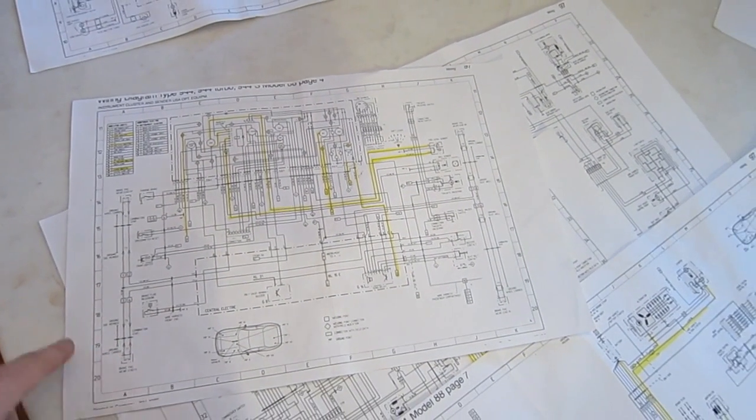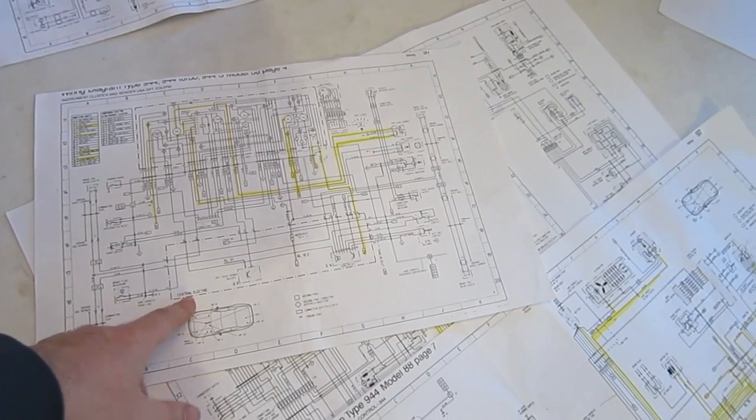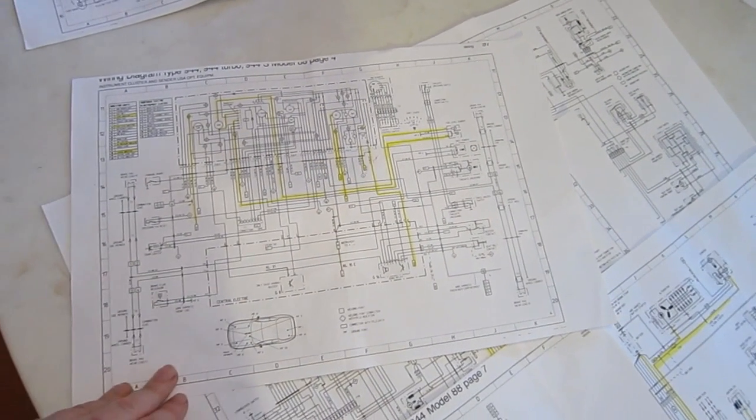So that's how the oil light comes on. That wire goes from the engine compartment to that central electric, or to the fuse block, and then it goes to the instrument cluster.